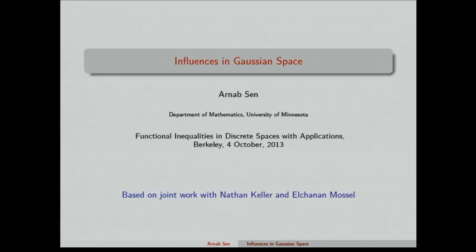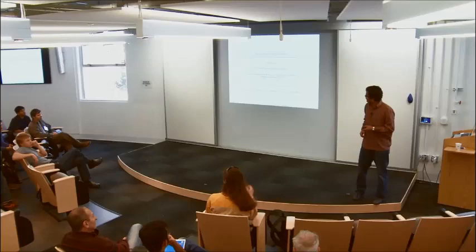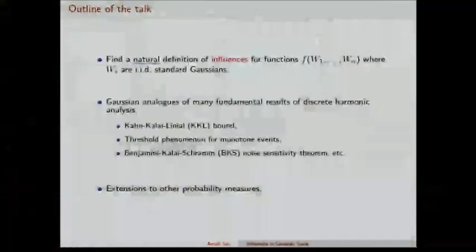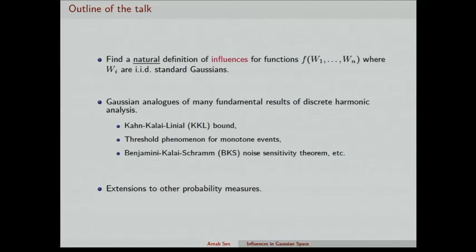Thanks to the organizer and thanks all for staying till the very last talk of this conference. This is joint work with Nathan Keller, Elker, and Mosel. I'll talk about influences in the Gaussian space. The project grew out of the following question: is there a natural definition of the influences of functions defined on the Gaussian space? So this is a function of n IID Gaussian random variables, and how can you define in a natural way the influences of this function?